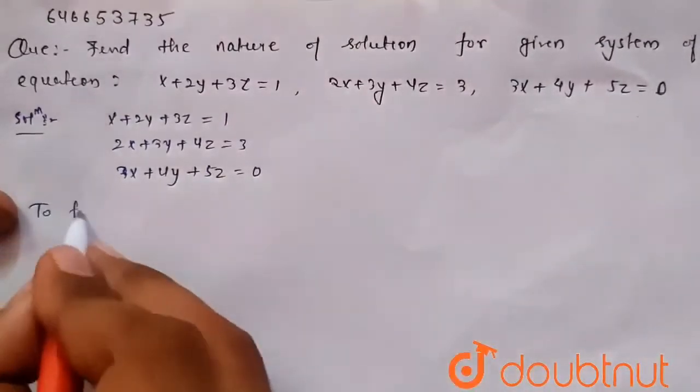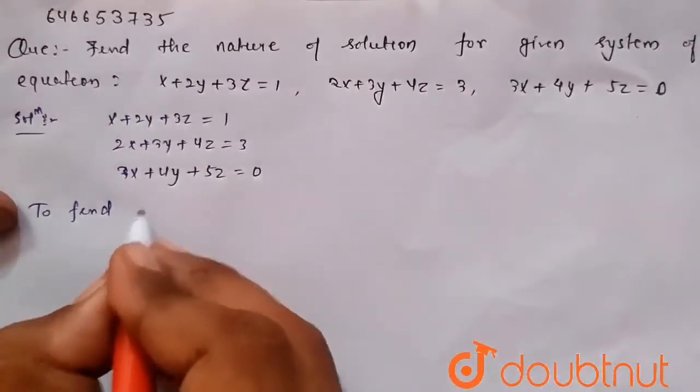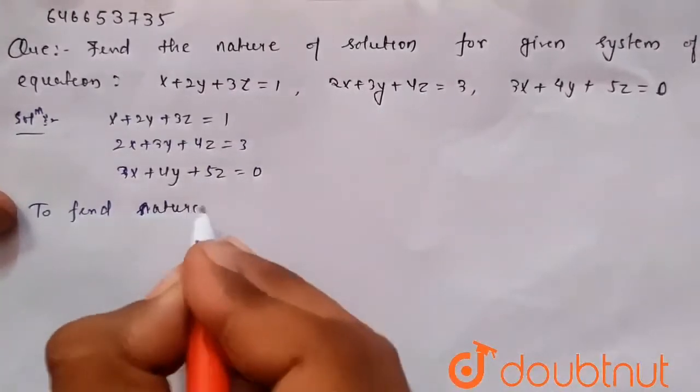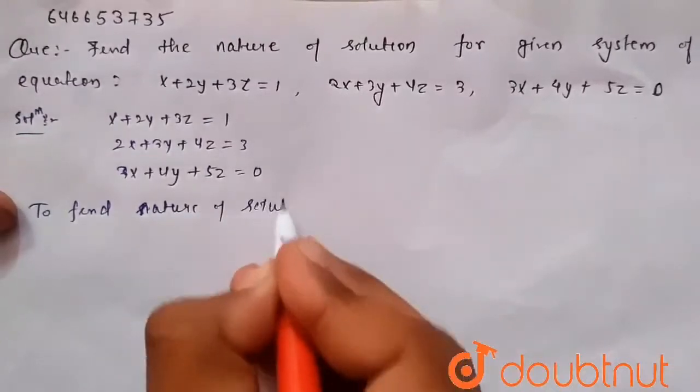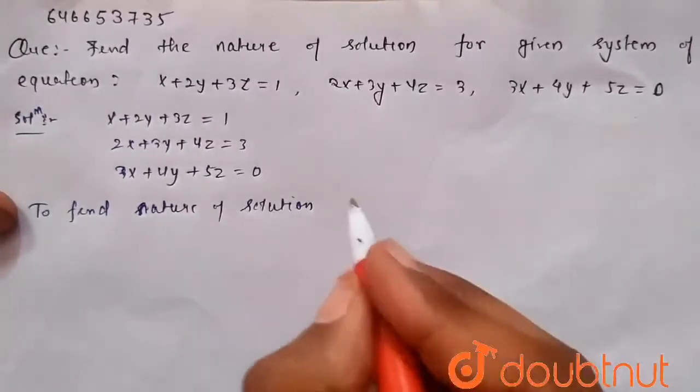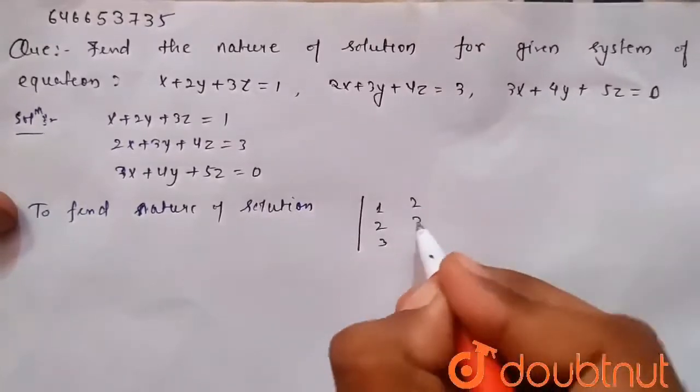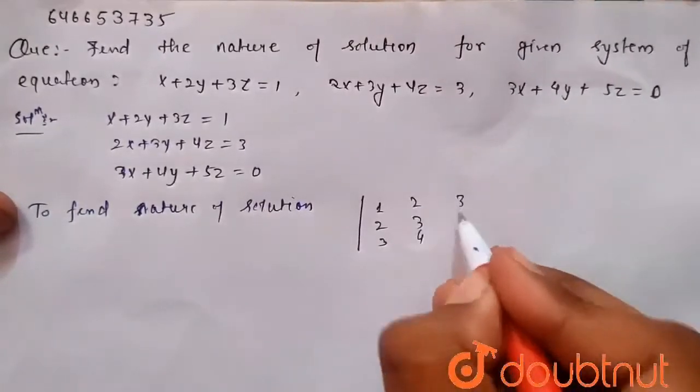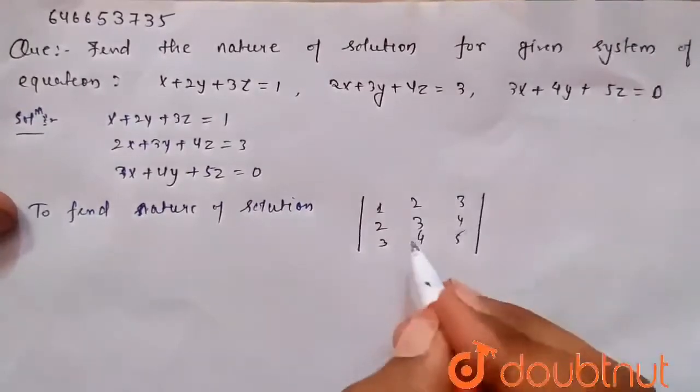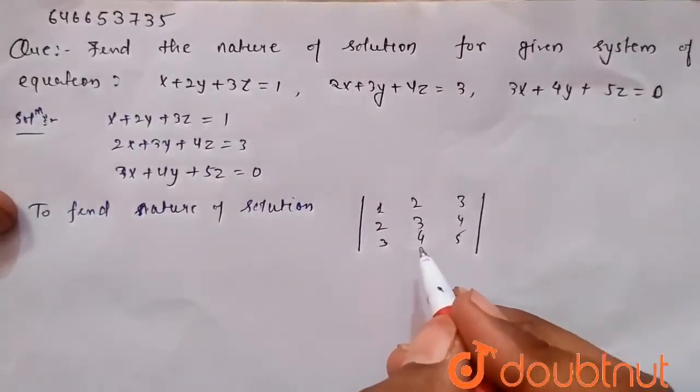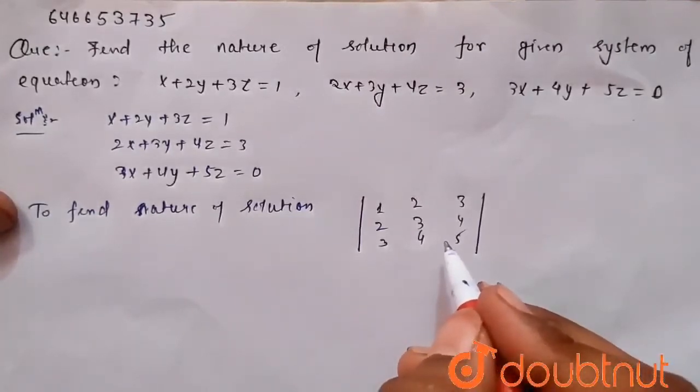So to find the nature of solution, we have to find the determinant of 1, 2, 3, 2, 3, 4, and 3, 4, 5. If this determinant is not equal to 0, then unique solution exists, but when this solution is equal to 0, so we have to check further for no solution and infinite solution.